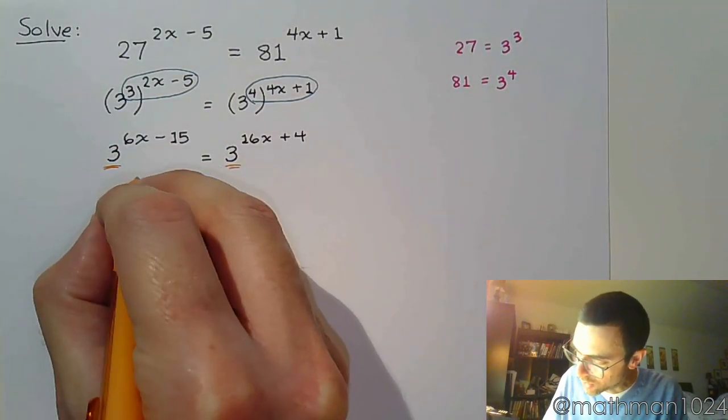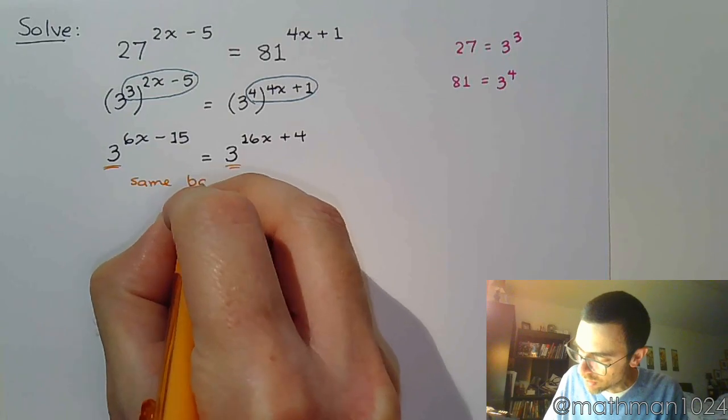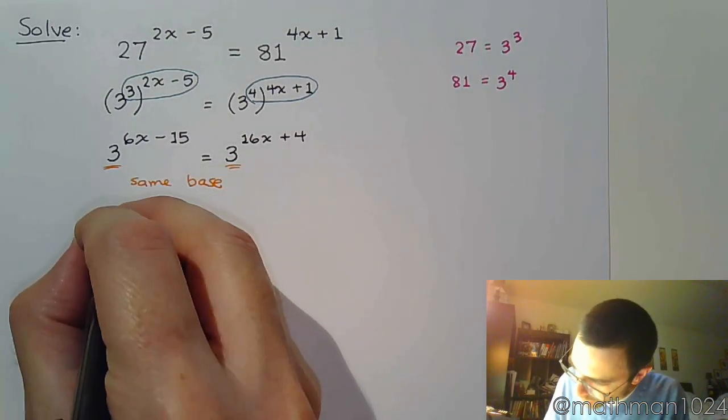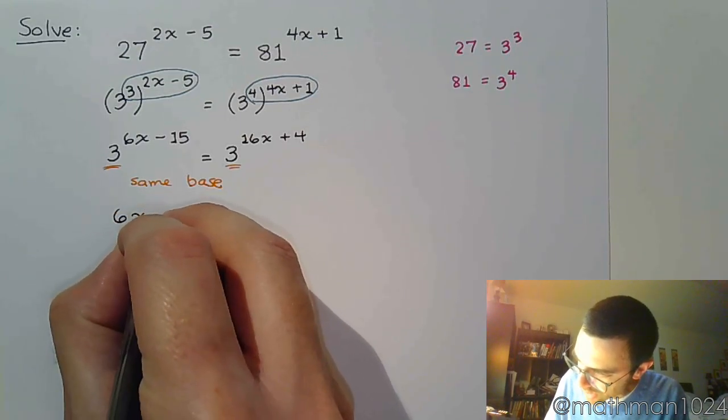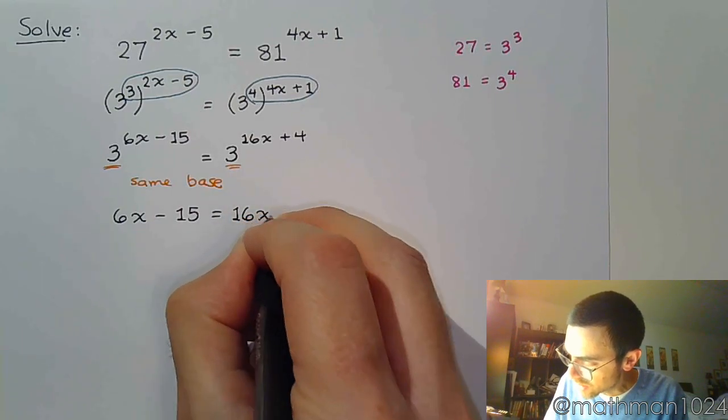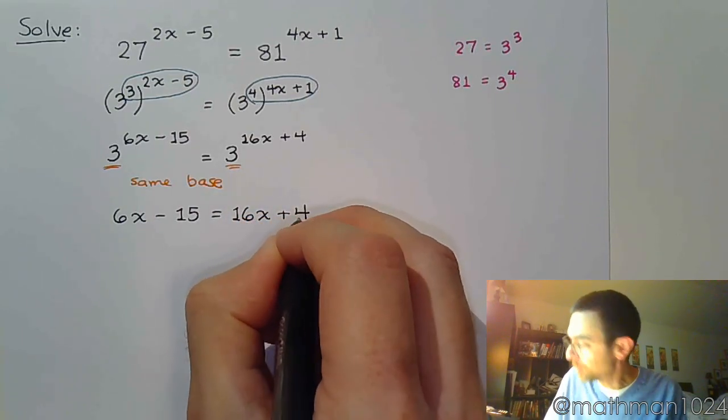We have here each side of the equation written with the common base, which is 3. So, we can now equate those powers and say that 6x minus 15 is equal to 16x plus 4.